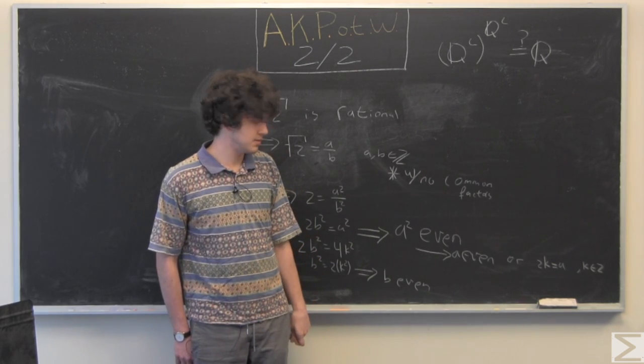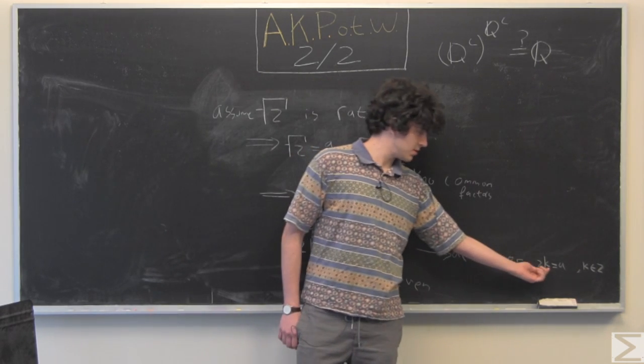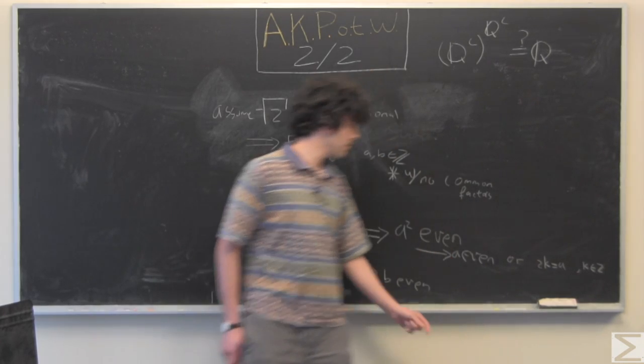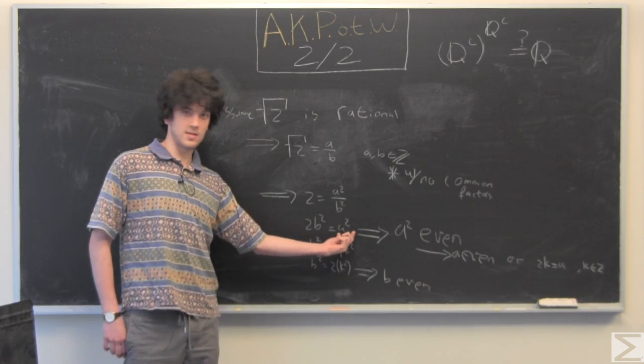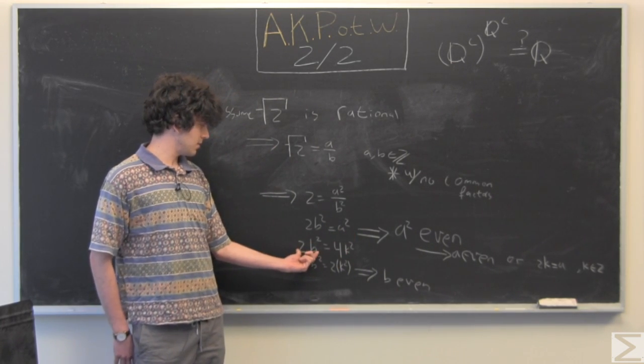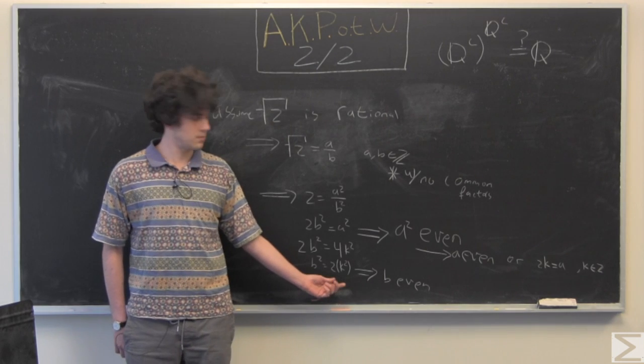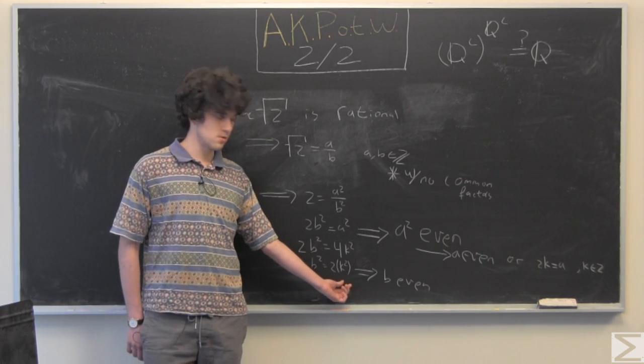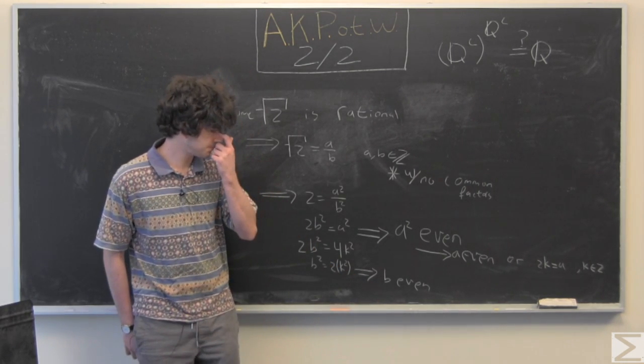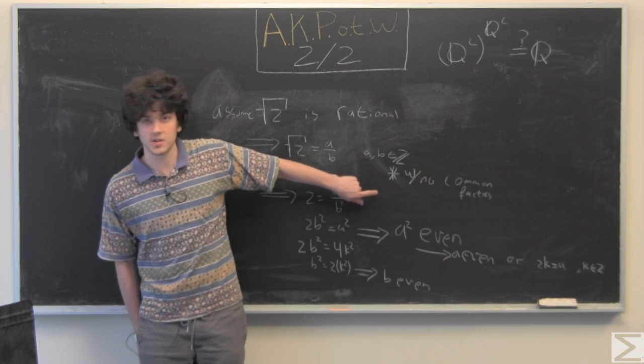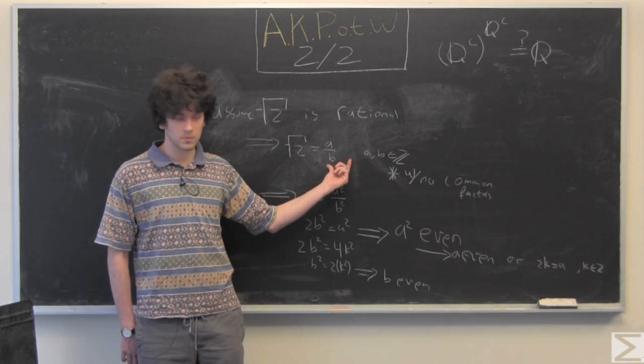And this also means that 2 times some integer is equal to a. So we substitute that 2k equals a into this here. So we have 2b squared equals 4k squared, divide each side by 2, b squared equals 2 times some integer k squared, which itself is going to be some integer, which means b is even. And since b and a are both even, we have contradicted our original claim that they have no common factors, because then this would reduce.